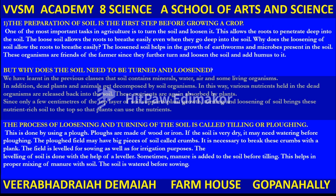Plows are made up of wood or iron. If the soil is very dry, it may need watering before plowing. That is why farmers wait for the monsoon rains before the start of agricultural work. The soil after plowing forms clumps called crumbs, and it is necessary to break these crumbs. The field is leveled for sowing as well as for irrigation purposes. Leveling of soil is done with the help of a leveler. Sometimes manure is added to the soil before tilling to help proper mixing of manure with soil.